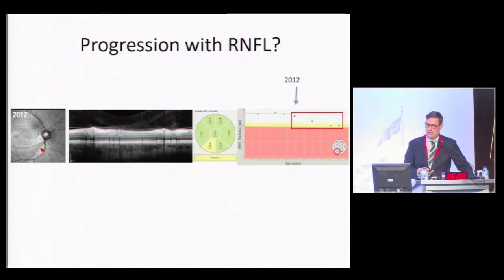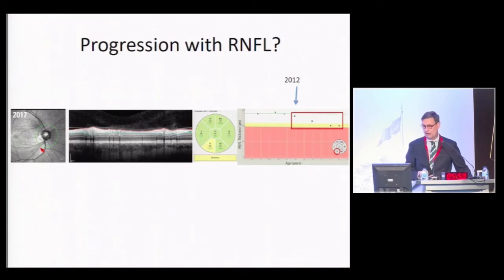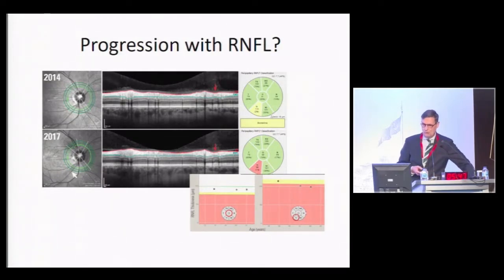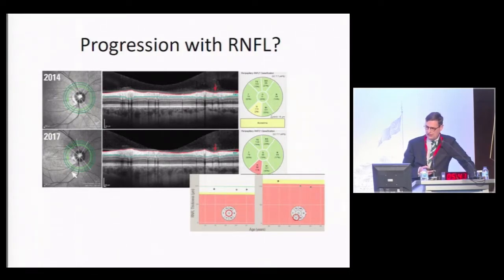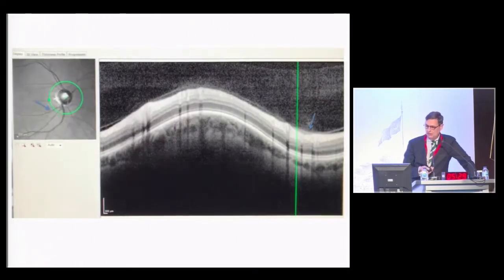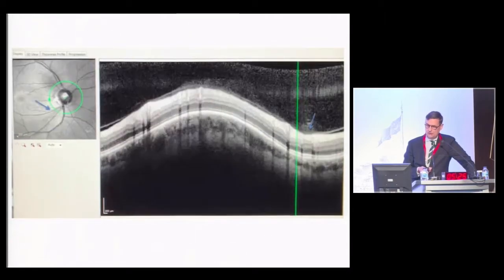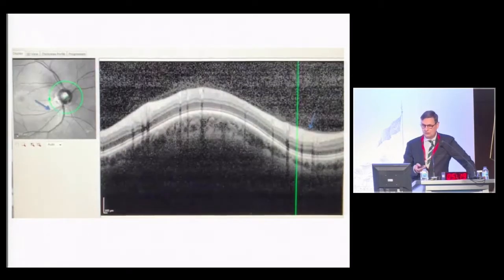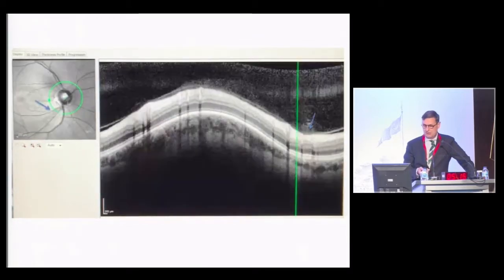When we look at nerve fiber layer progression with the old ring around the optic disc — not with the glaucoma module — we already see in 2012 that the nerve fiber layer is going down in our regression analysis. Using the glaucoma module with three rings around the optic disc, we also realize when we analyze the temporal inferior sector that the nerve fiber layer regression goes down, indicating the patient is losing nerve fiber layer. You can appreciate that the nerve fiber layer goes focally down, and in the infrared picture the dark area becomes larger.